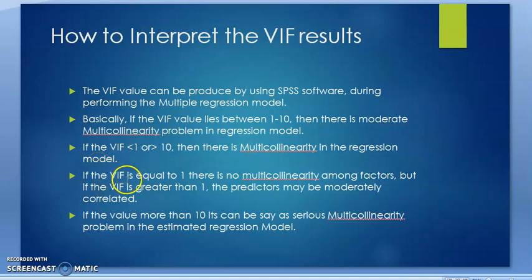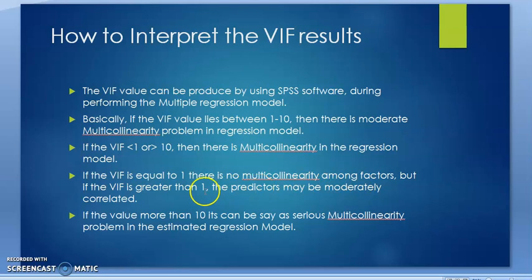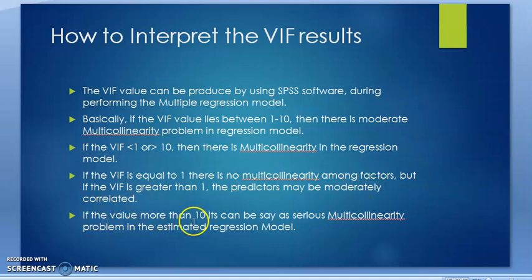If the VIF is equal to 1, we can say that there is no multicollinearity among factors. But if the VIF is greater than 1, the predictor may be moderately correlated. If the value is more than 10, it can be said that there is a serious multicollinearity problem in the estimated regression model.